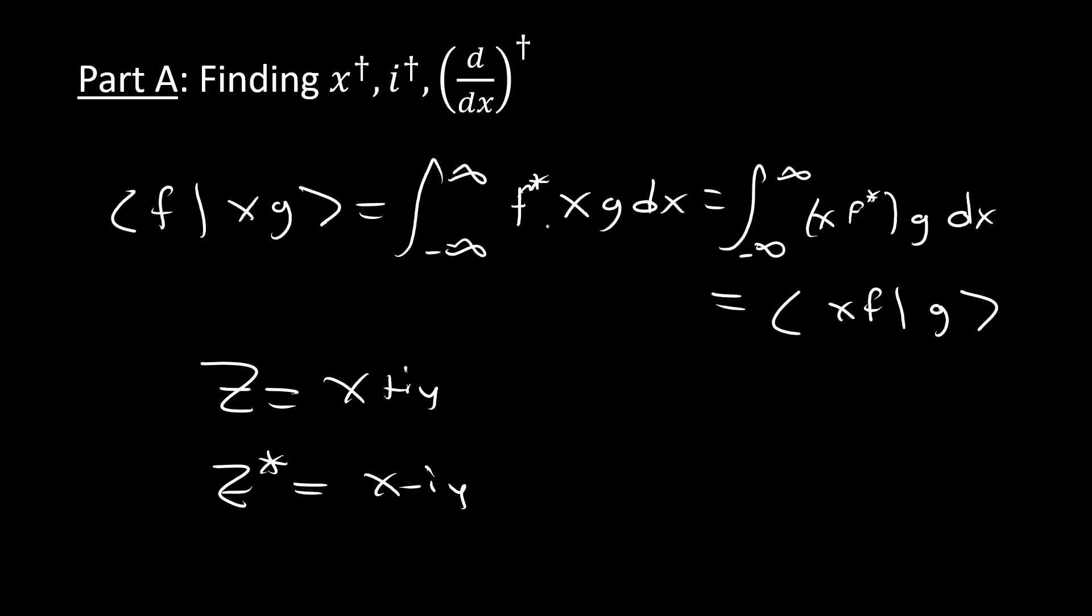And so with that, we can just take the complex conjugate of x to find that x dagger is just equal to x, just like we would find by doing this method right here. So this is the first part of part A. This is really simple. We don't need to do this integral, we can just take our complex conjugate.